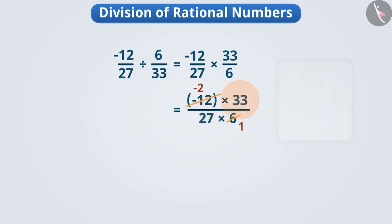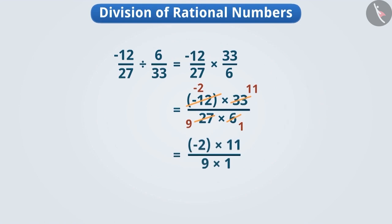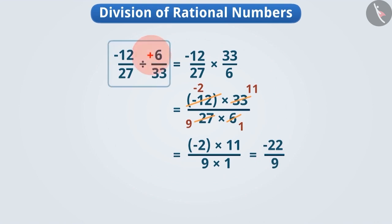Similarly, looking at twenty-seven and thirty-three, the HCF is three. We divide both by three: twenty-seven becomes nine and thirty-three becomes eleven. Now the numbers are small, so it is easy to multiply them. Minus two into eleven is minus twenty-two, and nine into one is nine. Thus, we get minus twenty-two by nine. The result of the division of a positive rational number and a negative rational number is negative.